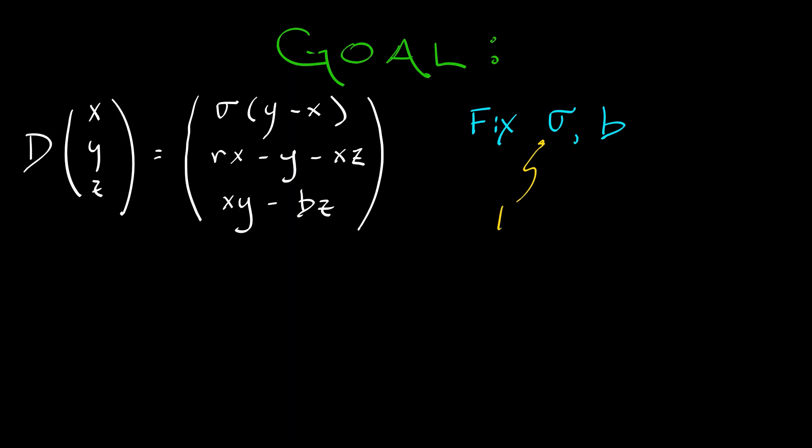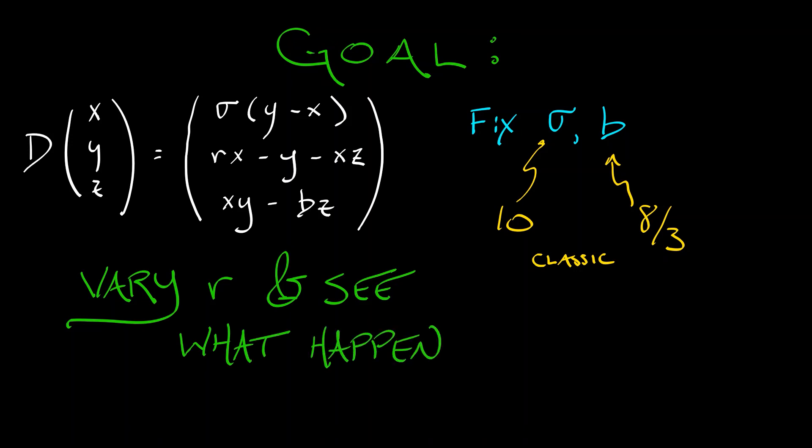sigma and b. The classic values that Lorenz used were 10 for sigma and 8/3 for b. And then take that last parameter, r, and let's use that as the dial. Let's vary r and see what happens.